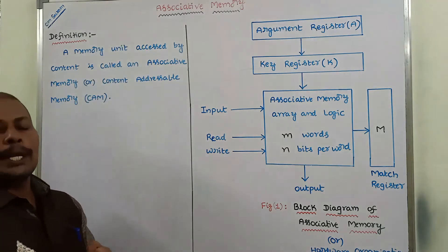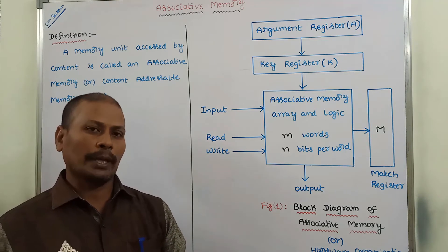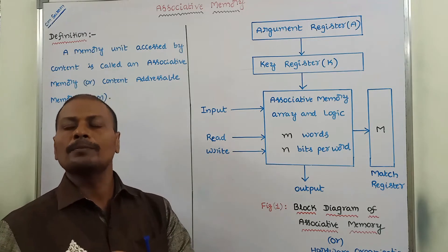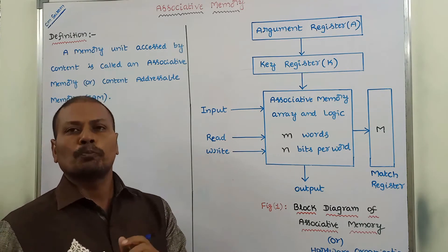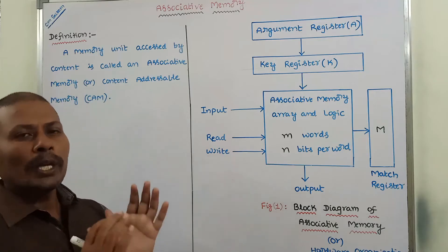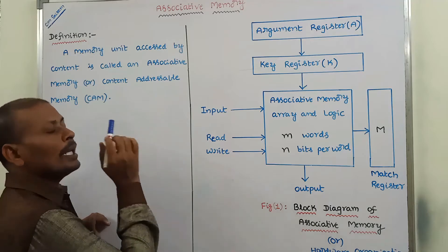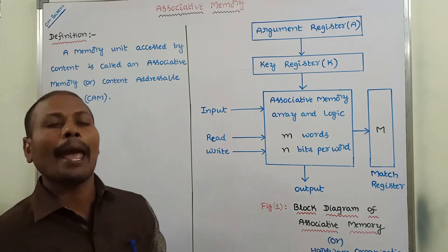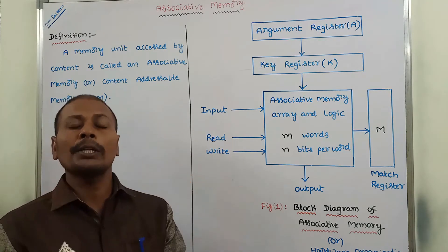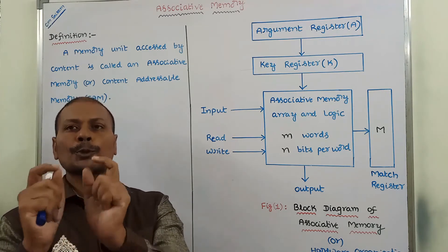On associative memory, we have to perform read and write operations. Suppose we want to perform the write operation — that means we want to store a particular word into the memory. We are not assigning any address. The memory is capable of finding an unused location, and once it finds that unused memory location, in that location we store the word.